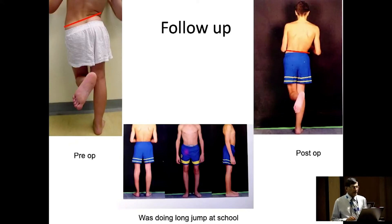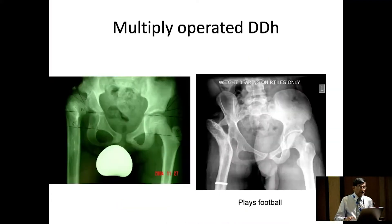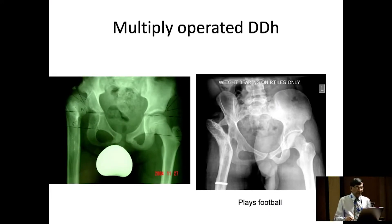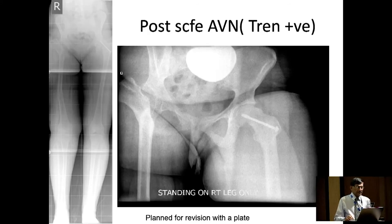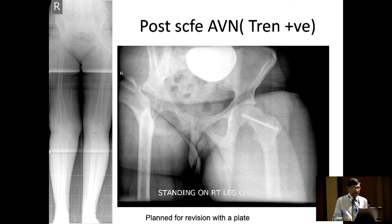Interestingly, one day he came and said he had pain in his hip. I asked what he was doing — he said he was doing long jump at school. So you don't necessarily have to have a femoral head, I would think. More recently, he came and showed me his first child. Another example: multiple operated DDH — he is now an assistant manager with a football team, doing quite well, and invited me to his wedding. On the issue of distal varization — if you do too much distal varization, it will reveal a Trendelenburg again, so you have to be careful how much you do because it will take away abduction and give back adduction.